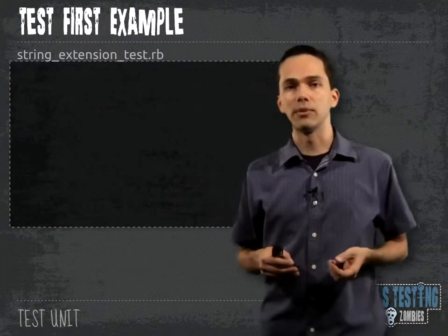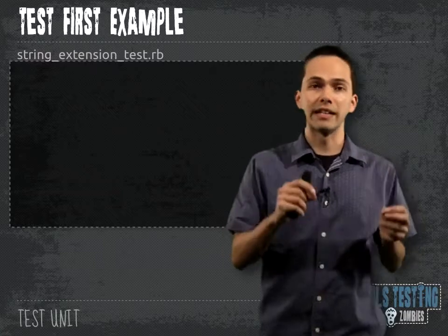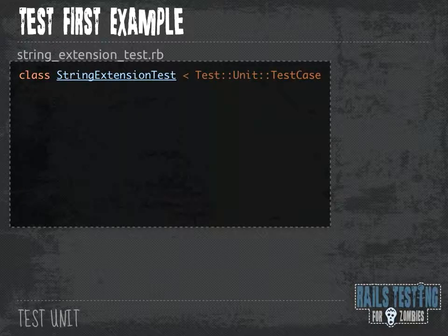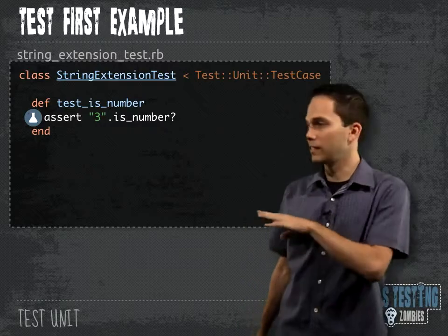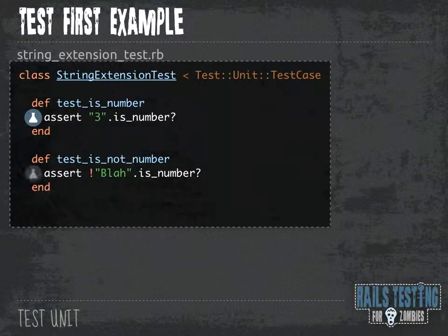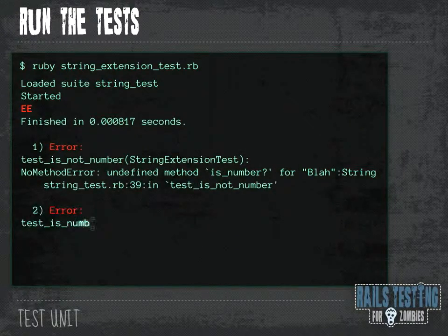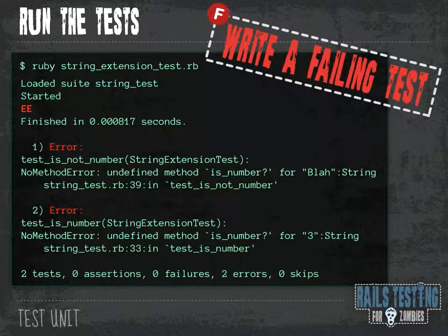Let's jump into a better example. This time we're going to extend the string class to give it some methods, and we're going to start test first by writing the test. Inside stringExtensionTest, our first test is going to be test_is_number — we're going to test to see if that string contains a number. Normally with test first we'd only write one test at a time, but for the sake of this example I'm going to write a second one — to test if the string is not a number. So we wrote the tests, let's go ahead and run them — and yes, they fail. They error out as they should. That's the first step in test first: we want to write a failing test.